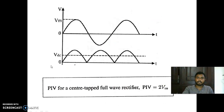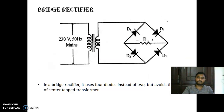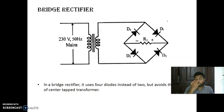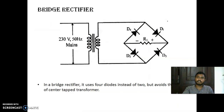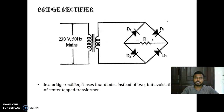This is the bridge circuit — the circuit arranged in this fashion is called a bridge circuit. We may have studied the same circuit in plus two, and normally we use it to measure resistance using the Wheatstone bridge, where we use the principle of bridge circuit. The same circuit we are using here to convert alternating current to direct current, or unidirectional current.